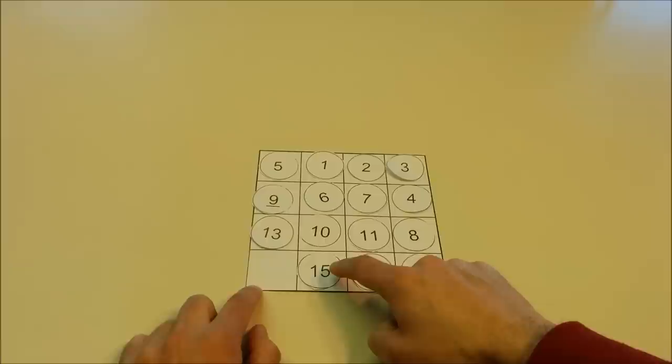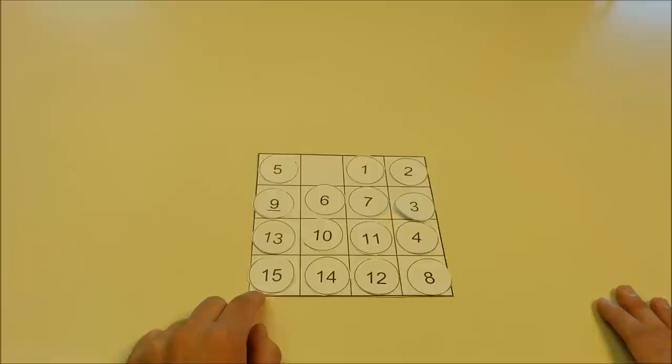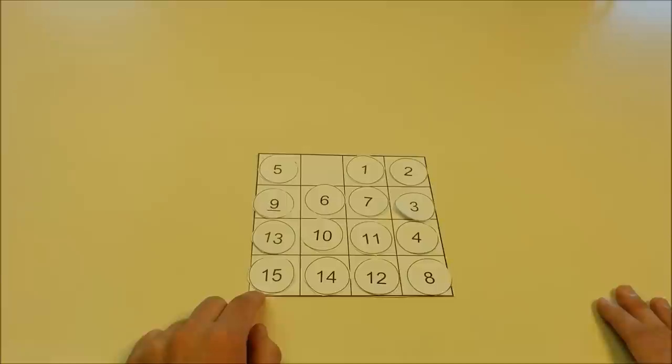So keep sliding the numbers around until you get 2 to be in the upper right-hand corner. At this point, move the second column, slide that entire second column up. And this is because we want to exchange the 14 in a different position.